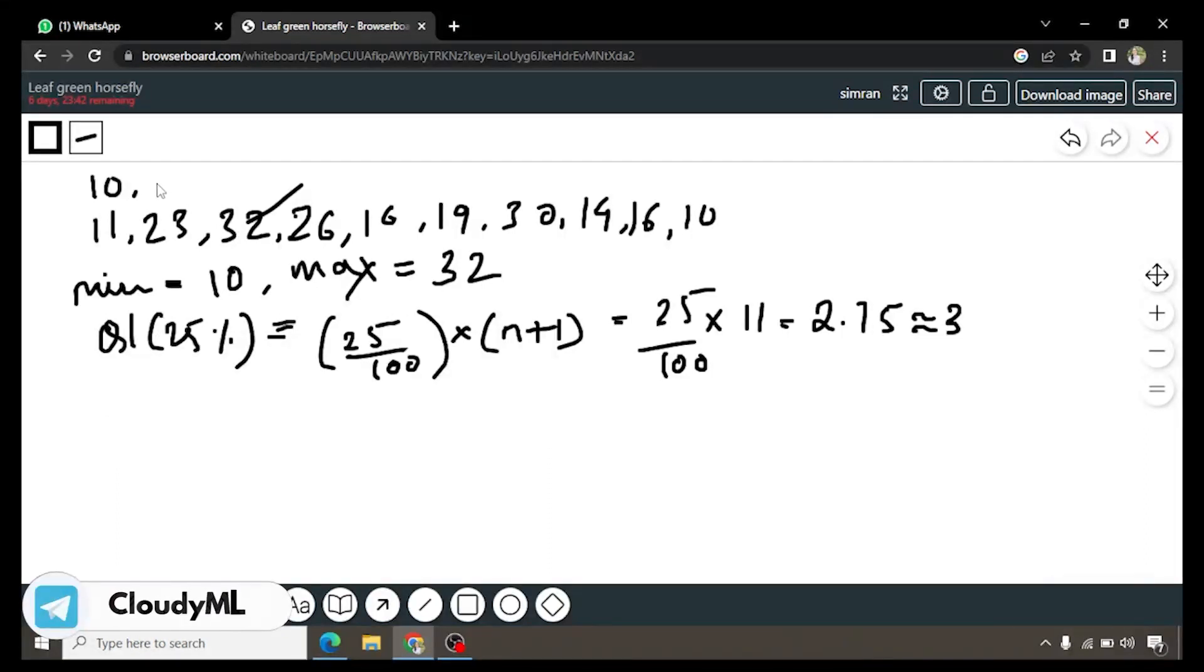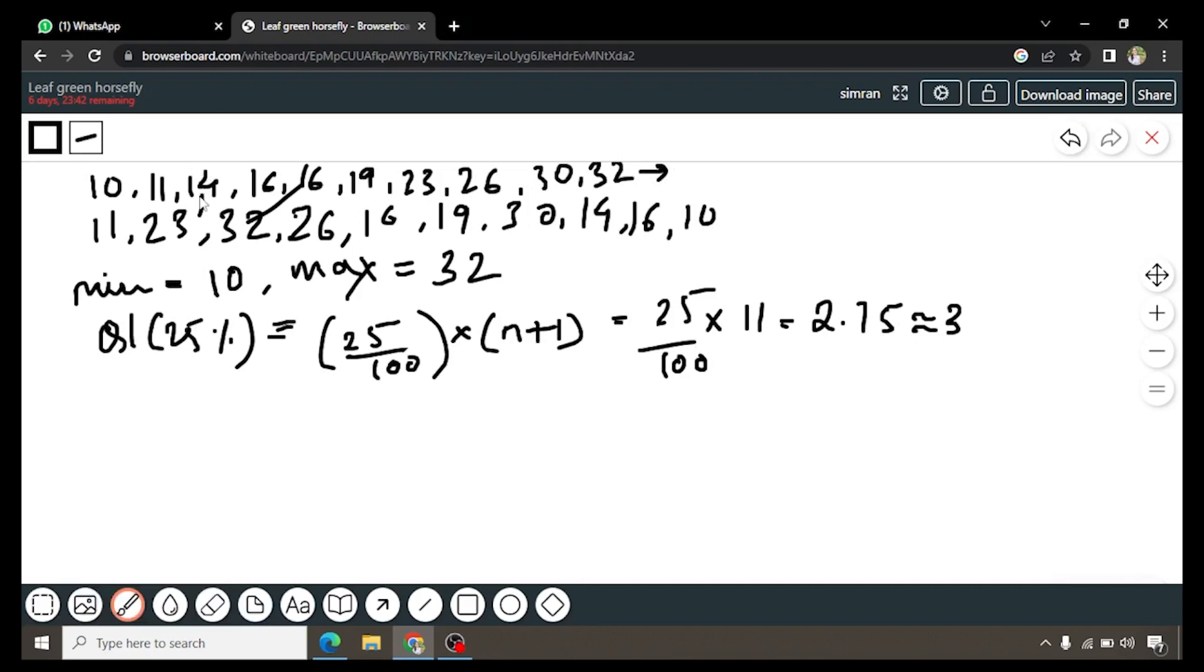This will be 10, 11, then 11, then 11, 14, 16, again we have another 16, then 19, then 23, then 26, 30 and 32. This is the ascending order. So in the ascending order, the 3rd place is 14. So this will be your 25th percentile mark which is 14.